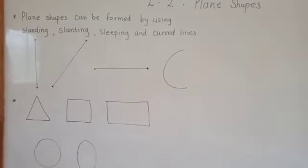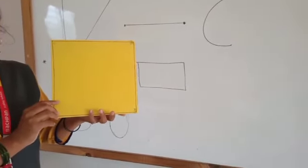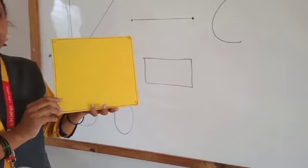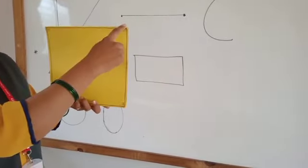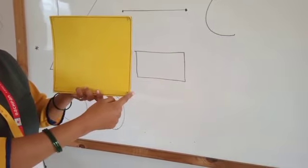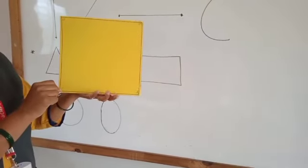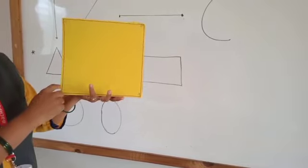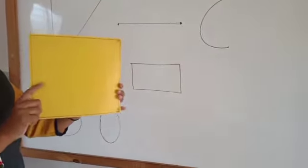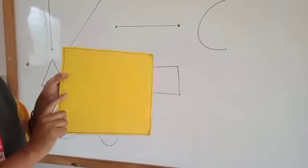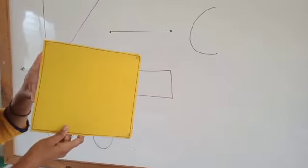Look at these shapes. You know what this is? We learned in first standard — this is a square. There is a slipping line. This is a vertical line, meaning standing lines, and also this is a slipping line and this one is a standing line. With these four lines we get a square shape. This is a plane shape. The name of this shape is square.